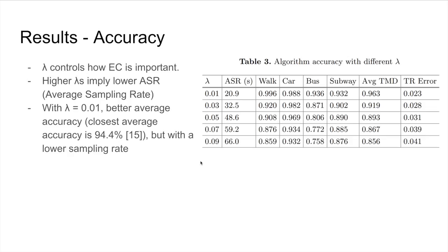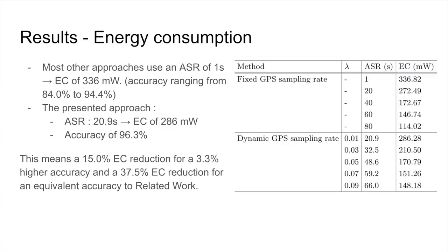Here's the results we had with our approach and our dataset. With a lambda of 0.01, we had a better average accuracy than the related work but with a lower sampling rate, which means that we actually saved more energy. Regarding energy consumption, most other approaches use an average sampling rate of 1 second, which gives an energy consumption of 336 milliwatts and an accuracy ranging from 84% to 94%. Our approach has an average sampling rate of 20 seconds, which translates to an energy consumption of 286 milliwatts for an accuracy of 96.3%. This means we have a 15% energy consumption reduction for 3.3% higher accuracy and a 37.5% energy consumption reduction for equivalent accuracy to related work.